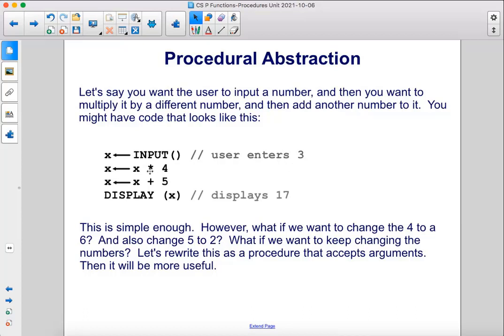Then we're going to save x times 4 into x. Then we're going to save x plus 5 into x, display x. If the user entered a 3, this code will display 17.